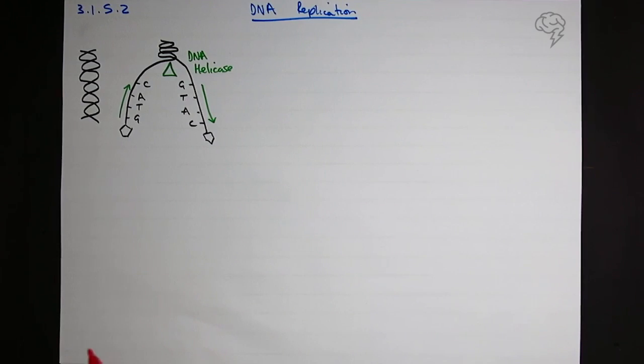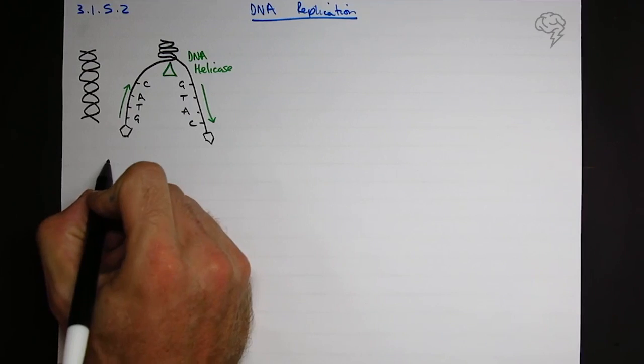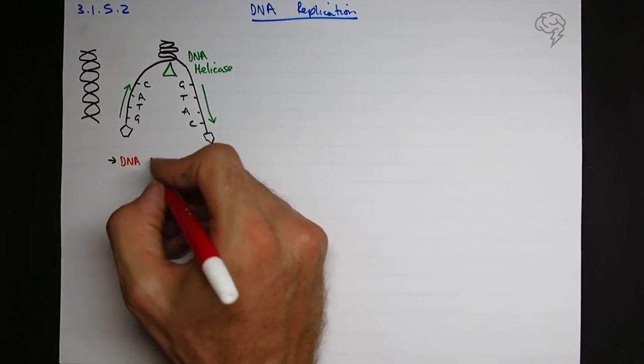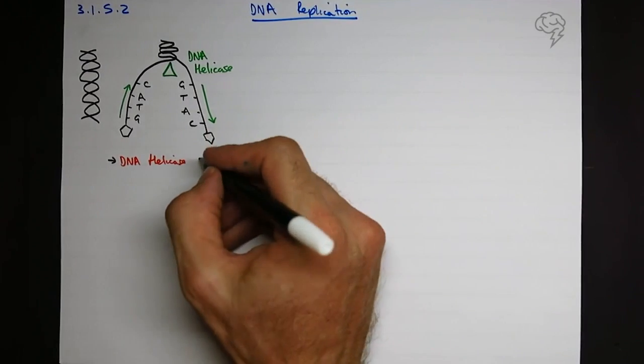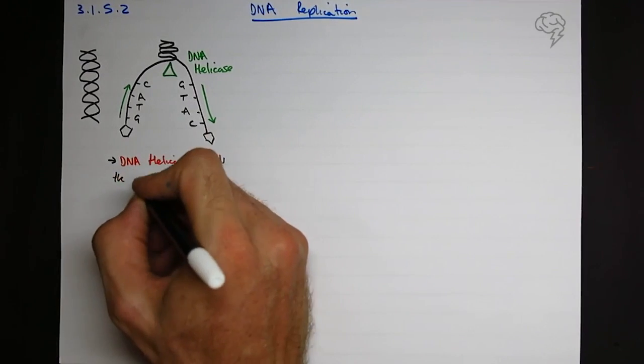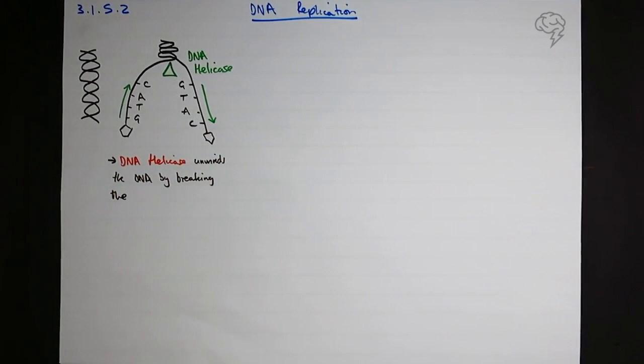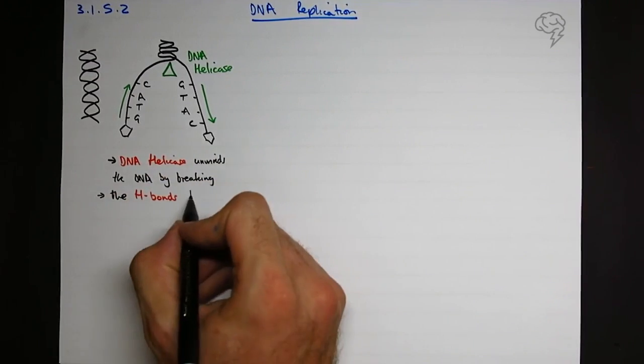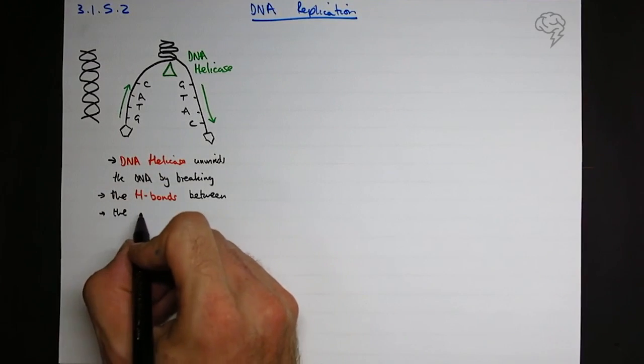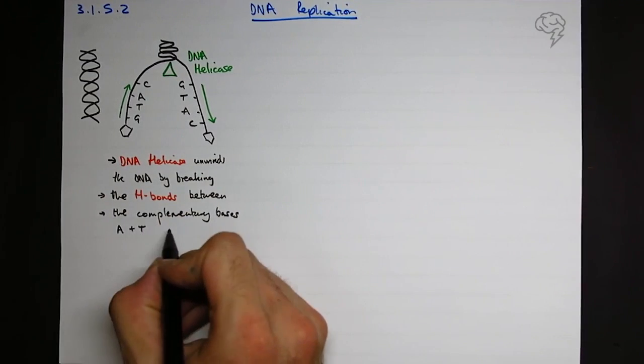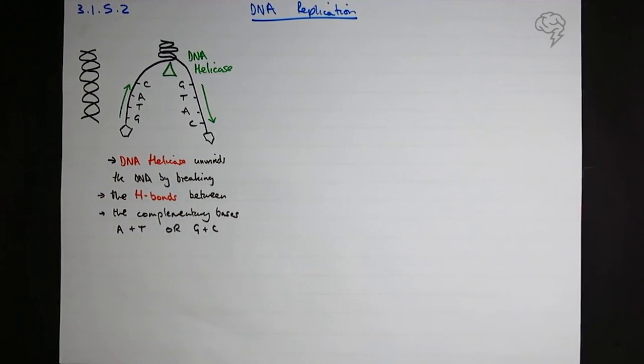So what notes can we make here? Well, DNA helicase. And again, you need to know this. It's not something I'm including for no good reason. Key term, DNA helicase. What does it do? It unwinds the DNA by breaking the hydrogen bonds. That's a key point. Between the complementary bases. So complementary A with T. So A and T or C and G. So that's what DNA helicase does. Now it's open.